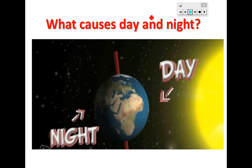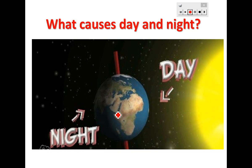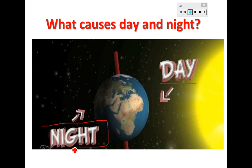Now it's time for the question you've been asking since the beginning of the lesson: what causes day and night? Every day we wake up in the morning, and it's dark at night — what causes this? Here you can see the Sun and Earth. Earth is spinning. The half of Earth that is facing the Sun has daytime, and the other half that is facing away from the Sun has nighttime. Now we know the answer!